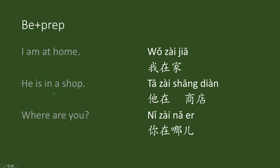He is in a shop — 她在商店 (tā zài shāng diàn). 商店 is 'shop'. In Chinese, we don't have to have articles in front of a noun. So 她 means 'he/she', zài means 'is in', 商店 means 'shop'. Where are you? Nǐ zài nǎr? That means 'you are at where.'